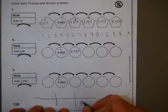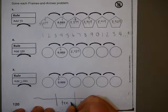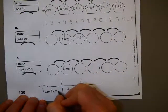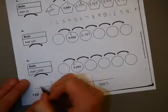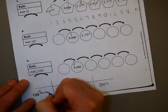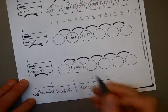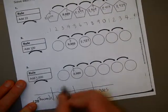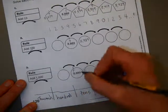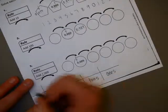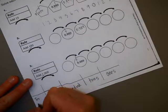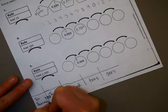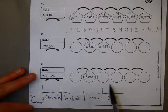Ones, tens, hundreds, thousands. So, when it looks like this here, these are the four places. Thousands, hundreds, tens, ones. And then, you'll have to create one more place for this last one for ten-thousandth place. So, you'll actually have five places.